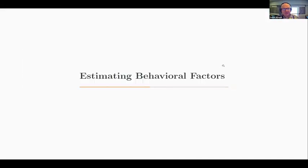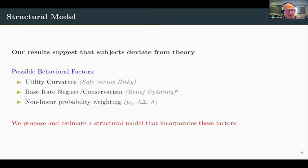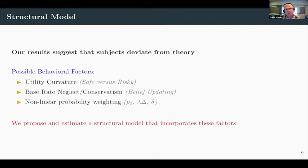This leads us to estimate behavioral factors, since subjects are deviating from theory. The first behavioral factor is utility curvature or risk preferences — with a safe arm and a risky arm, risk preferences naturally come into play. Another factor is base rate neglect or conservatism in belief updating: when pulling on the risky lever you're constantly updating your belief, and if you update differently from Bayes' rule that will affect the time it takes to hit the cutoff belief. We also consider nonlinear probability weighting, since we present certain parameters to subjects as probabilities and they might be misweighting those probabilities.